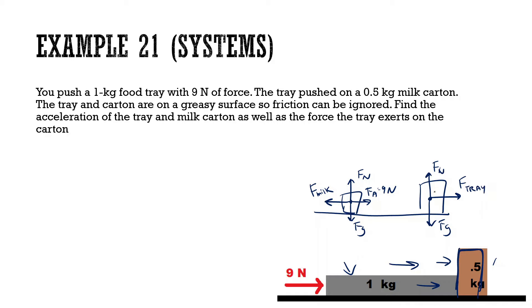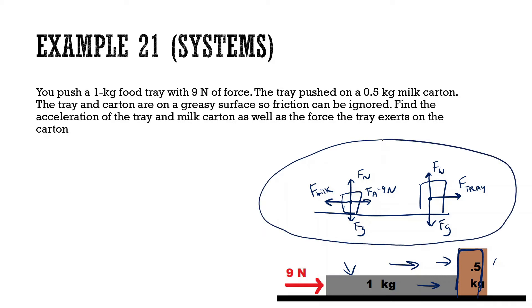First, we look at the whole system to find acceleration — we always do this when finding acceleration. Sum of all forces in x equals mass times acceleration. We have force of milk going to the left, plus force applied going to the right.